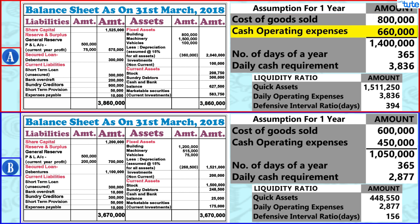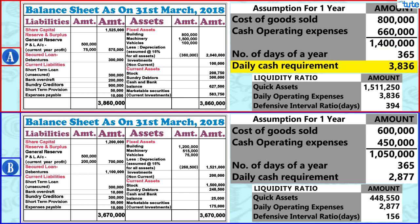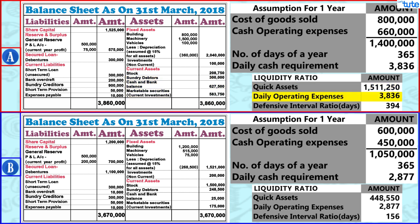Now let's understand this with an example. Assuming for Company A, cost of goods sold is 8 lakhs and cash operating expenses (after deducting non-cash expenses) is 6 lakhs. Dividing this 14 lakhs by 365 days a year, we get a daily cash requirement of 3,836. When we calculate the Defensive Interval Ratio by dividing quick assets — that is debtors, cash and bank balance, and marketable securities — by the daily operating expense of 3,836, we get a ratio of 394 days.